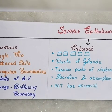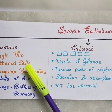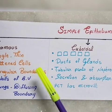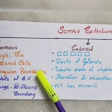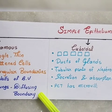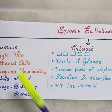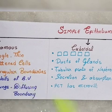Blood vessels are present in the lungs. We need to use the diffusing body. This is a single layer — squamous epithelium — used for diffusion.